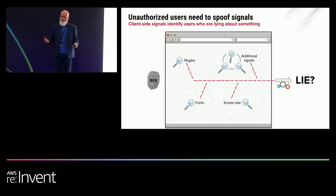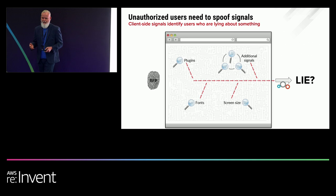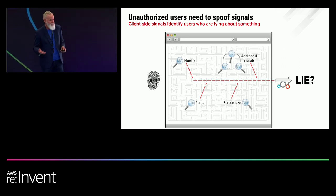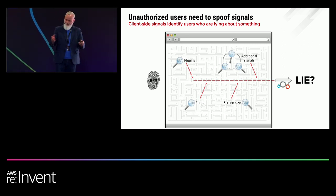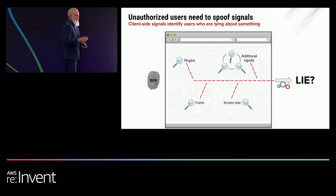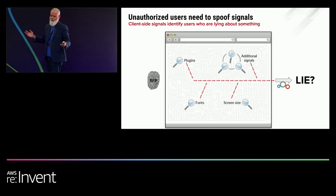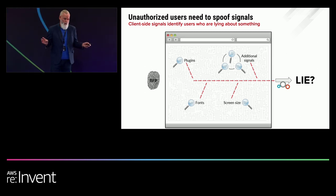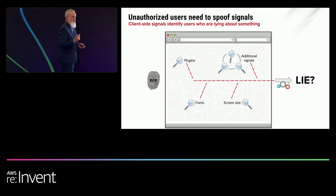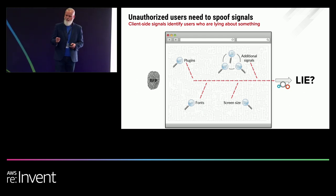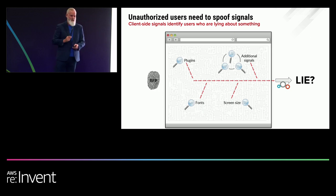In addition to behavioral biometrics, we interrogate the browser and collect things like plug-ins, fonts, and screen size. We apply some algorithms to all this and generate a browser fingerprint. Some of you might be thinking those things are spoofed all day long — and they are. But we have an advantage. Why do they spoof those signals? They spoof them to hide in the noise, but they don't know what the noise looks like, so it gives us an advantage.